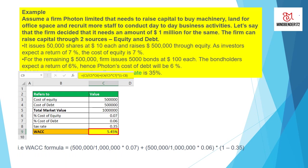A company must raise capital to buy new machinery and needs about a million dollars. The firm can raise capital through two sources: equity and debt. It issues 50,000 shares at $10 each, raising $500,000 through equity, or it can raise money from issuing bonds — $500,000 from 5,000 bonds at $100 each. Bondholders expect a 6% return, and shareholders expect a return of 7%, so 7% is the cost of equity.